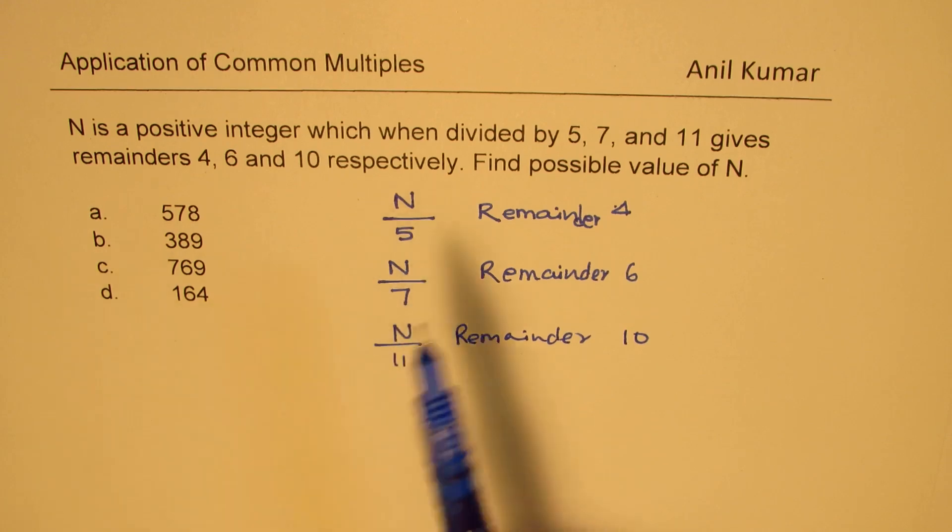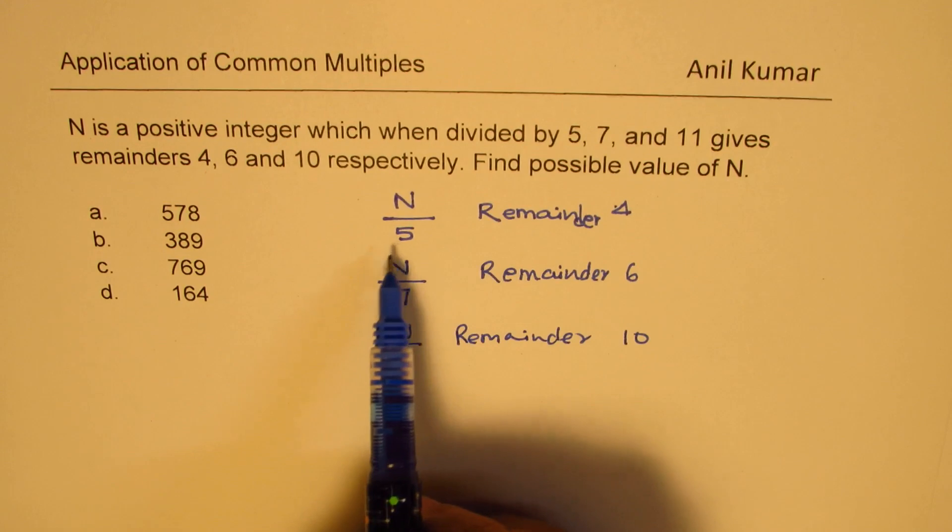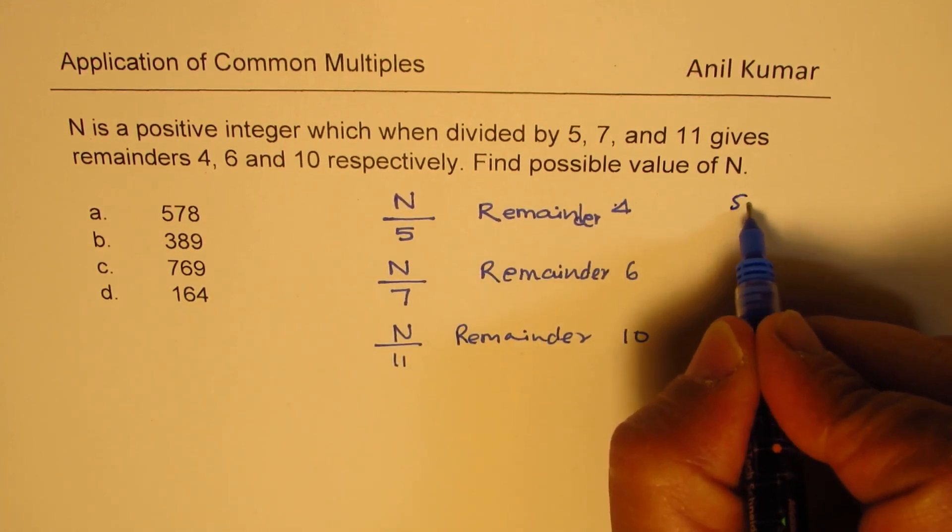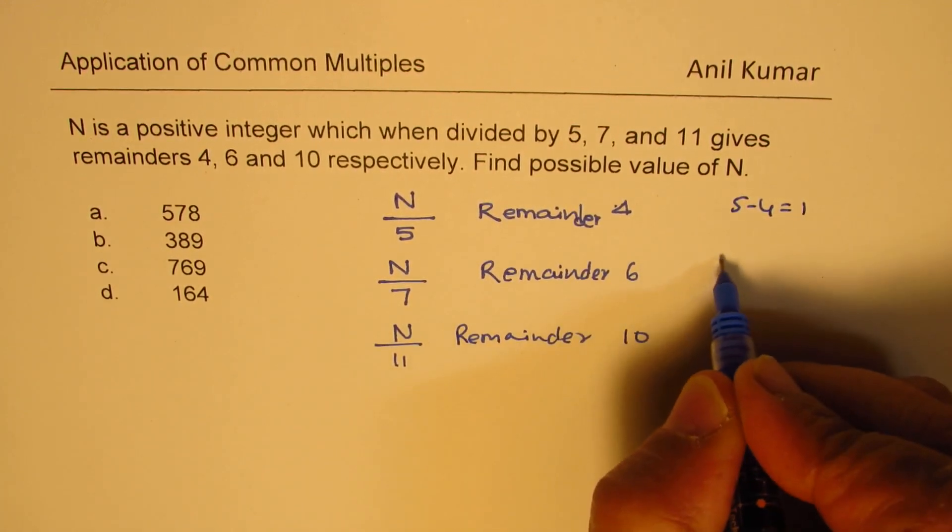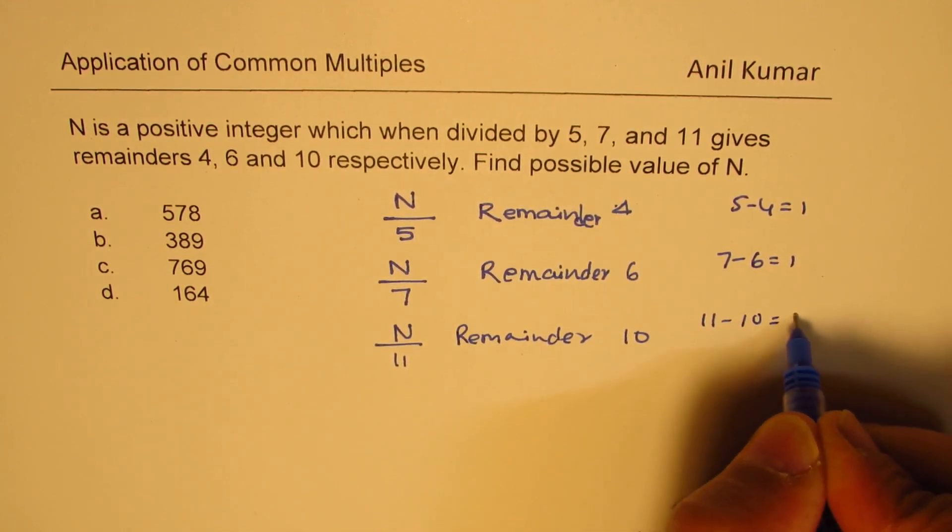You notice that this is 1 less than the divisor. So 4 is 1 less than 5. You see 5 minus 4 is 1. You also see 7 minus 6 is 1, and 11 minus 10 is also 1.